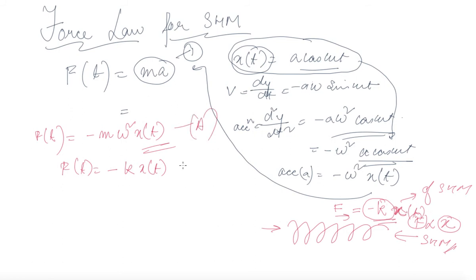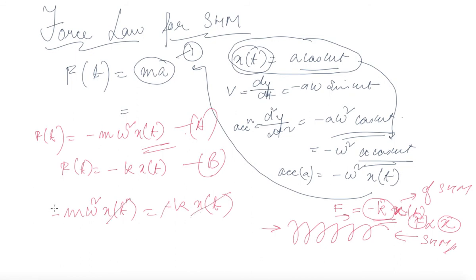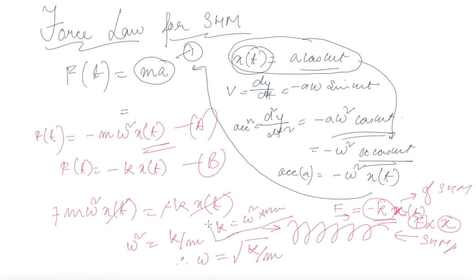Let equation (a) be F(t) = -mω²x(t) and equation (b) be F(t) = -kx(t). Comparing both equations, x(t) and the minus signs cancel, giving ω² = k/m. Therefore, angular frequency ω = √(k/m), and stiffness k = ω²m. This is how angular frequency is defined using the force law for simple harmonic motion.